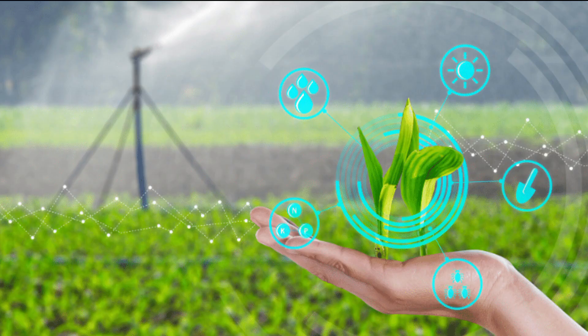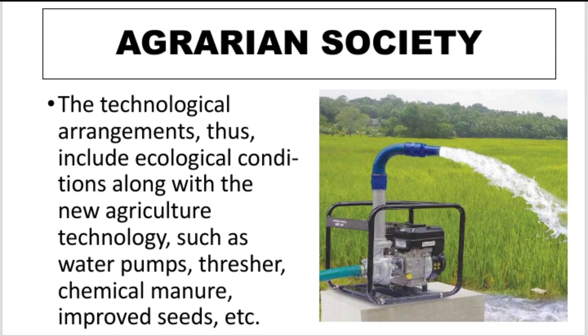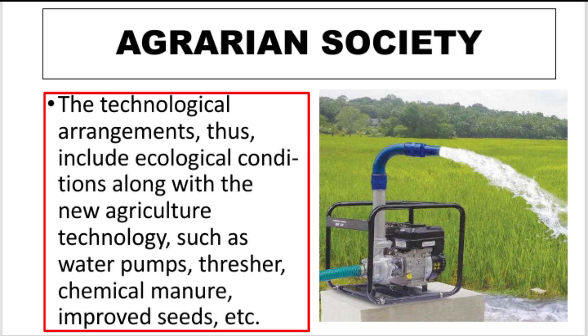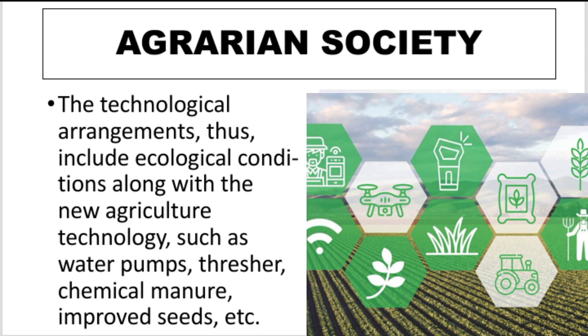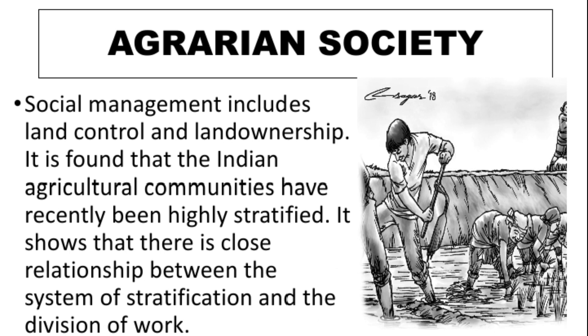Particularly, the technology used for cultivation purposes is important. This includes technological arrangements such as new agriculture technologies like water pumps, threshers, chemical manure, improved seeds, etc. Another aspect of the agrarian system is social management relating to land control and land ownership.